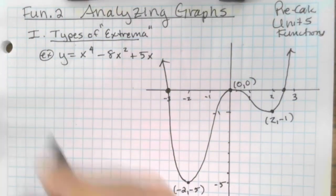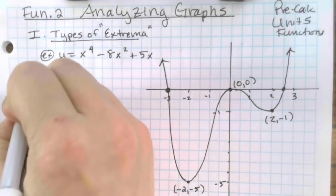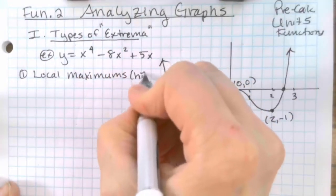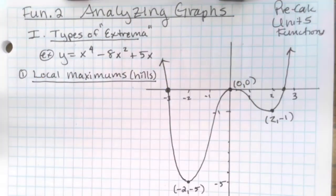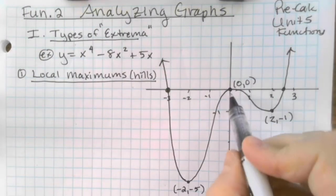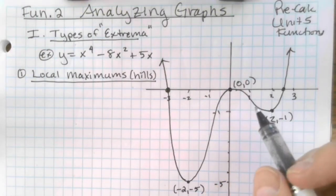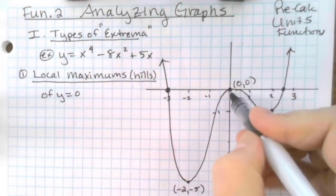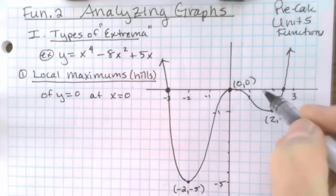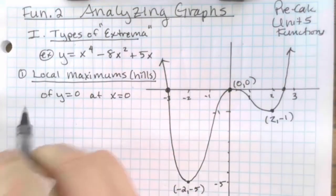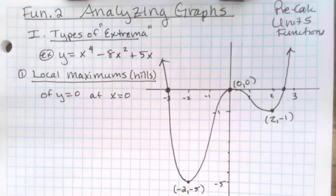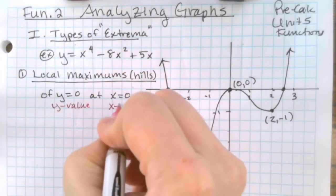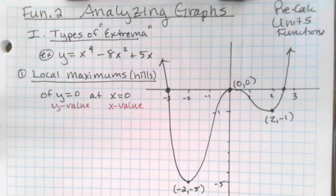So this is our example function. Number one, we're going to look for what we call local maximums. Local maximums are kind of like hills. We're looking for maximums at different spots. We have one little hill here, and when you write your local maximums, it's the y value first — so y equals 0 at x equals 0 — and then you always say at the location. The maximum is the y value and then it's at the x value, which is the location of that particular maximum.